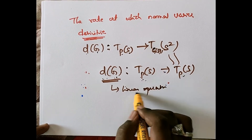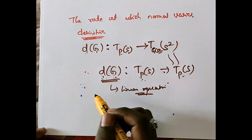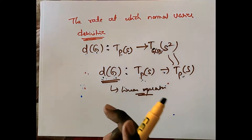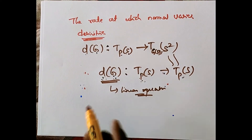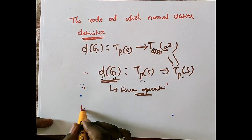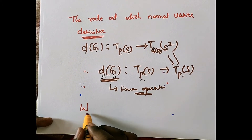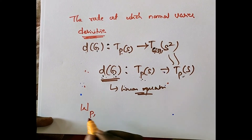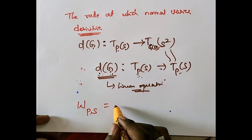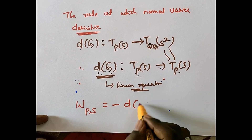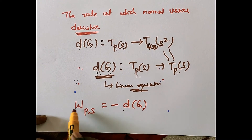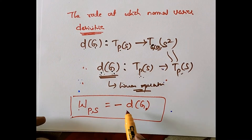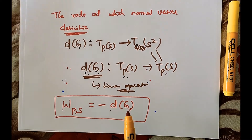We started with the Gauss map and derived its derivative. Now we define the Weingarten map, denoted W. At a point p for surface S, the Weingarten map is defined as the negative of the derivative of the Gauss map. So the negative derivative of the Gauss map gives us the Weingarten map.